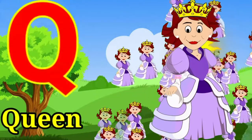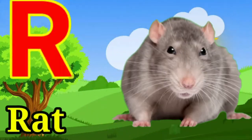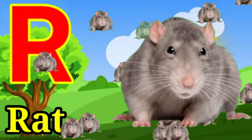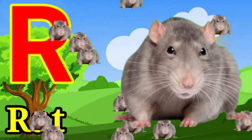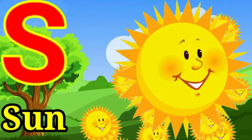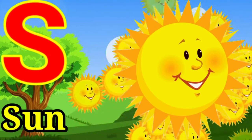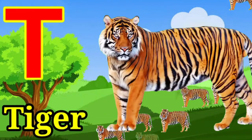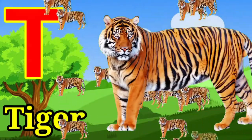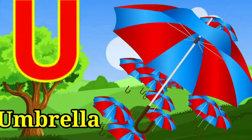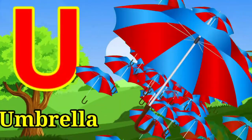Q for queen, R for rat, S for sun, T for tiger, U for umbrella.